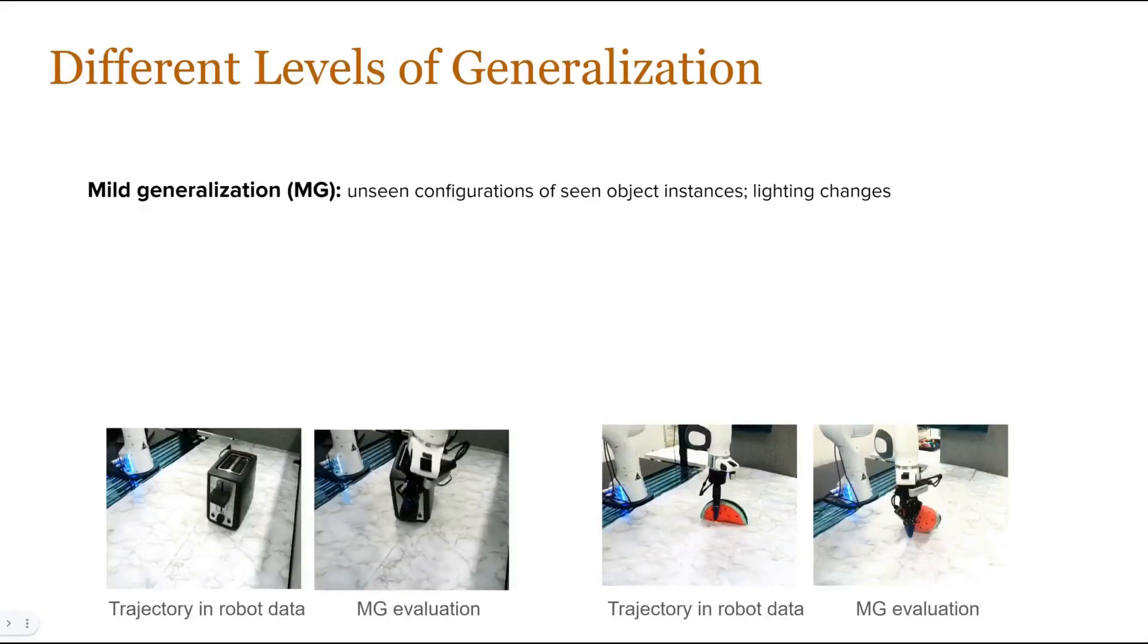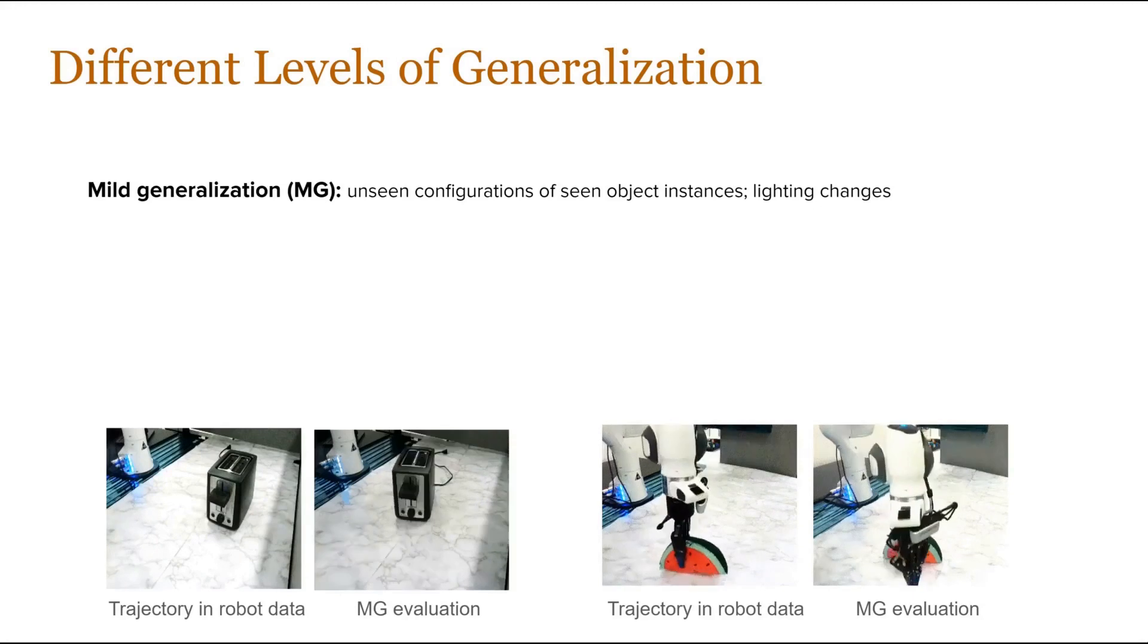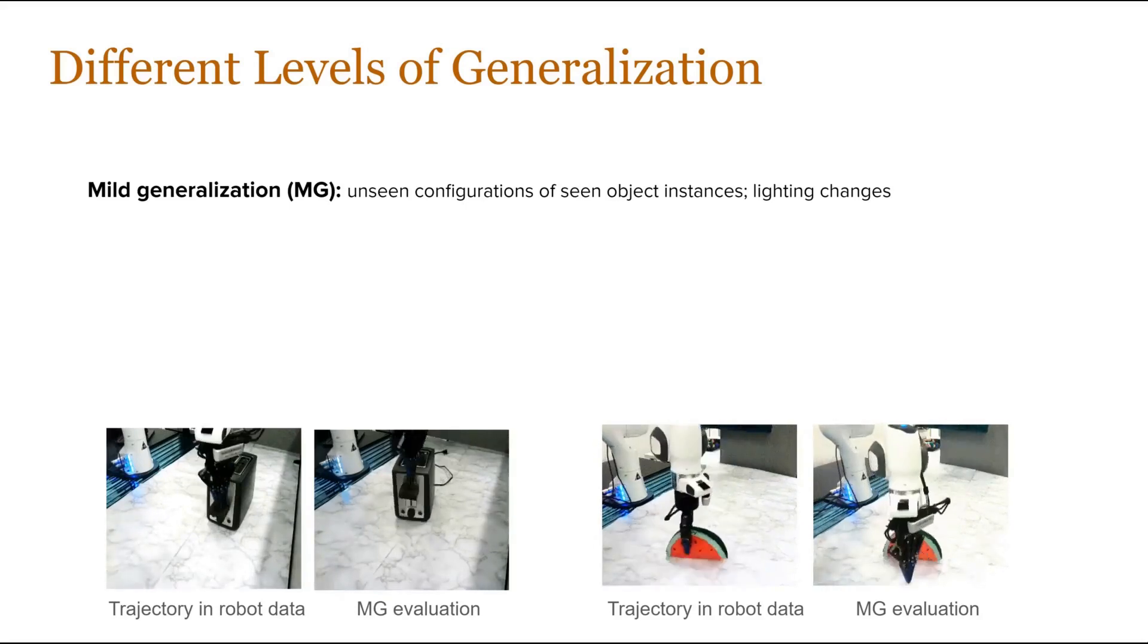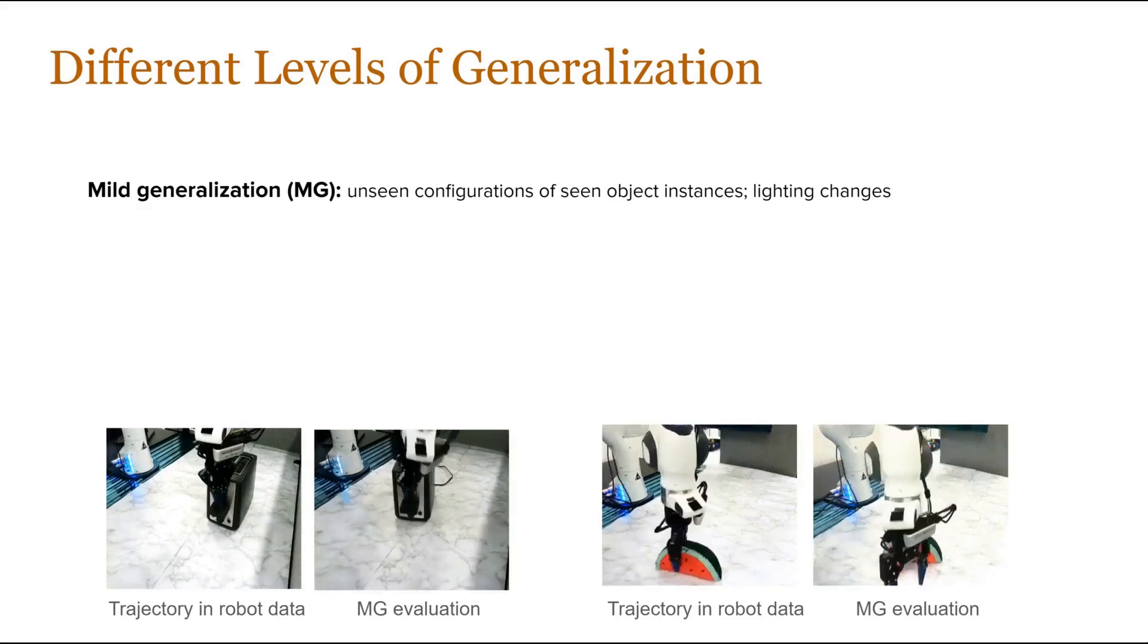To quantify the performance of our framework, and due to the lack of standardization in generalization nomenclature in the community, we define three broad generalization axes. In mild generalization, we have unseen configurations of scene object instances or minor changes in the scene, like lighting variations, as shown in the GIFs here.